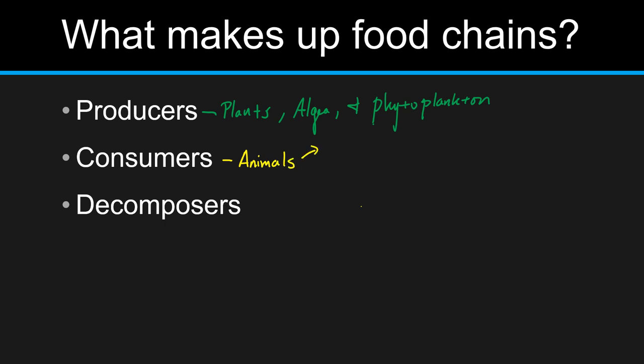Consumers can be broken into three different categories. We have herbivores, omnivores, and carnivores. The herbivores are going to eat exclusively plants. Carnivores eat meat, so other animals. And omnivores will eat both.